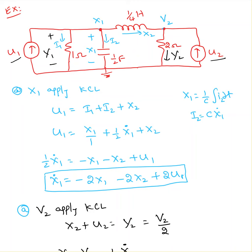At node x1, applying KCL: u1 is coming in, i1 is going out, i2 is going out, and x2 is going out. So u1 equals i1 plus i2 plus x2. The state equation must have only terms x1, x2, and u. So i1 and i2 are unknown variables that need to be replaced. i1 is the current through the 1 ohm resistor, so i1 equals x1 over 1 ohm.